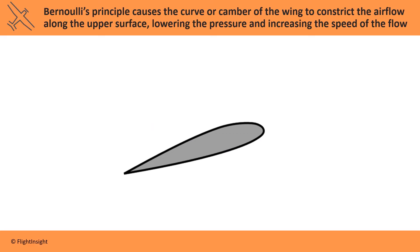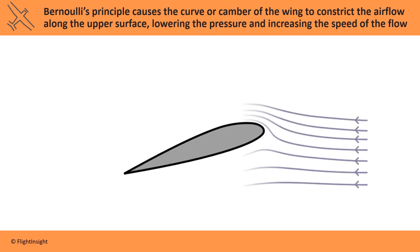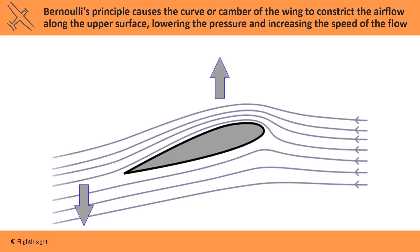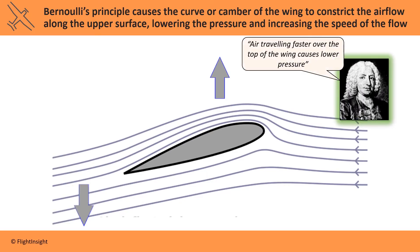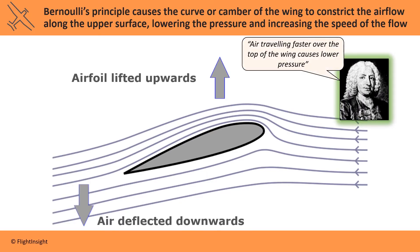On a cambered wing like the one seen here, air moving along the upper surface is constricted. Bernoulli's principle says that this air will travel faster and cause a lower pressure over the top of the wing. This is one of the basic ways lift is produced, as the downward deflection of air causes an upward lifting force to be exerted on the wing.